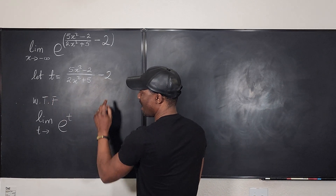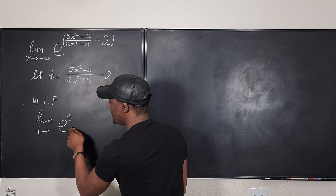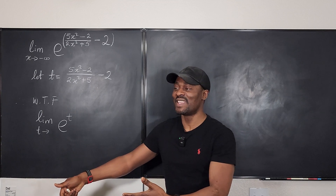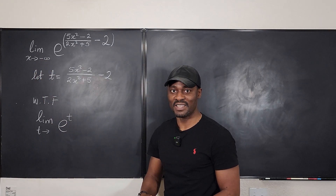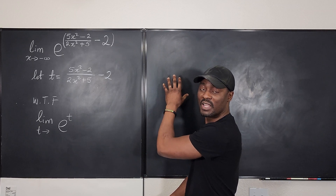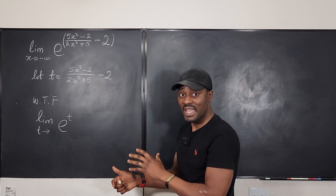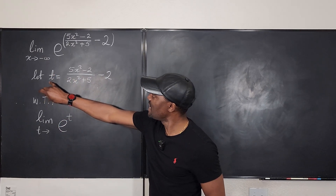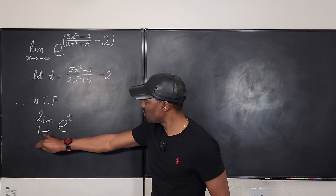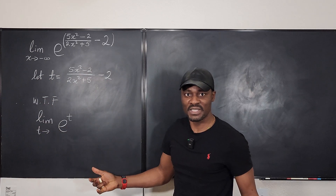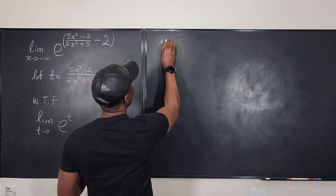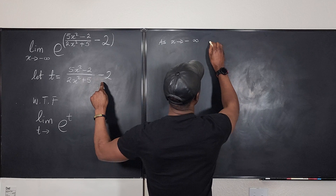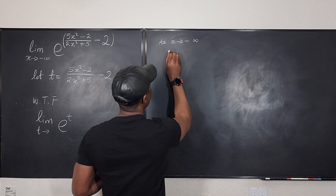So I've made my t this expression, and I want to see what happens as t goes to something. I've got to find out where t is going when x is going to negative infinity. This is where a lot of work begins. Let's see what happens to t as x goes to negative infinity, and then we can solve this easily.